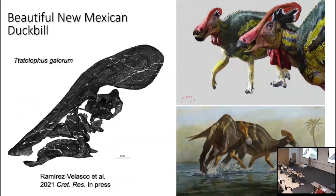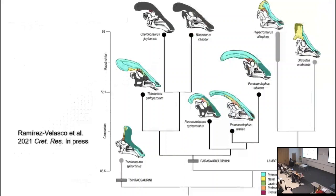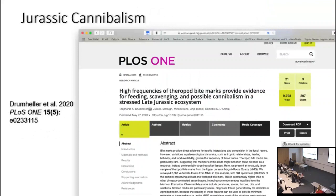As an example of some new ones from this year: a beautiful new Mexican duckbill — not from New Mexico, but from the nation of Mexico. It is a tube-crested duckbill related to some other North American ones. Very well preserved with good material. The paper on it doesn't just look at anatomy — it also talks about its evolutionary relationships to other North American and Eurasian duckbills, and it turns out it's more closely related to the Eurasian ones based on this analysis.